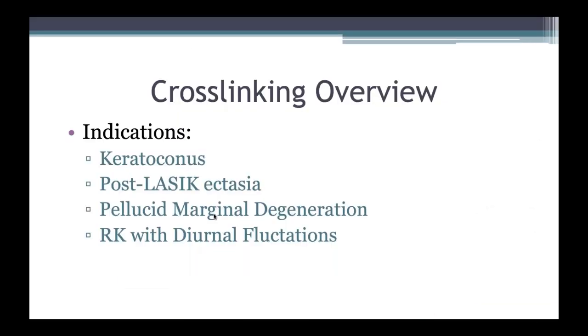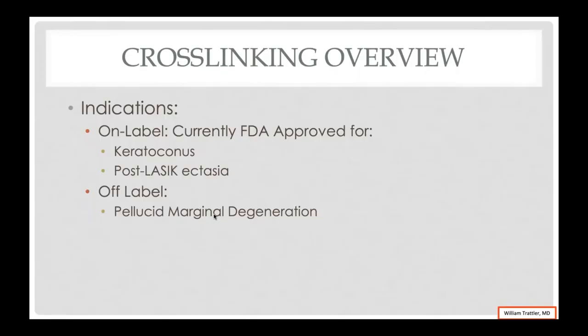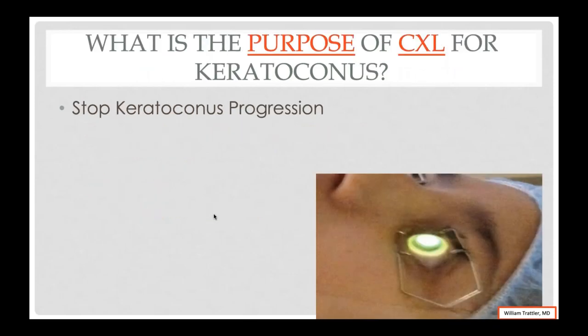Now let's talk about crosslinking and get back to cataracts along the way. Crosslinking can be used for keratoconus, post-LASIK ectasia, pellucid marginal degeneration (which is off-label in the United States), and RK with diurnal fluctuations (also off-label). Currently the FDA approves crosslinking for both keratoconus and post-LASIK ectasia. RK patients are pretty rare.